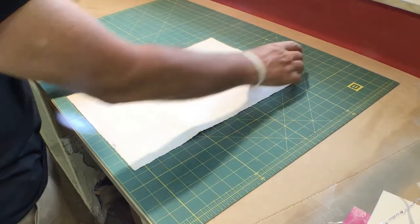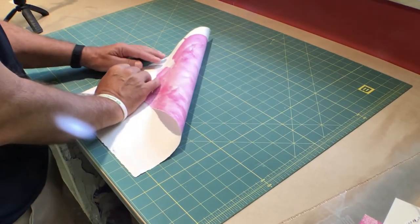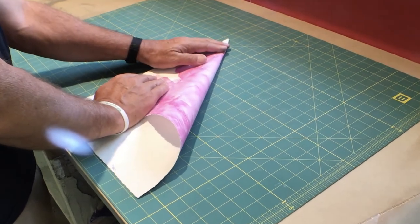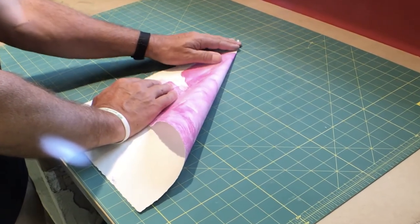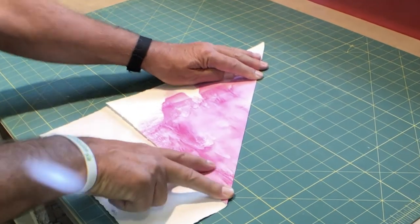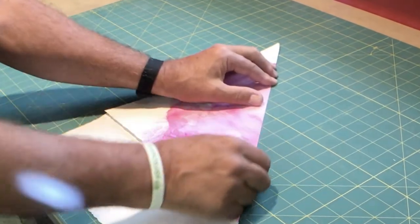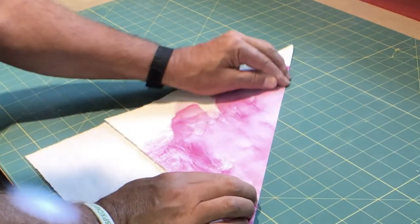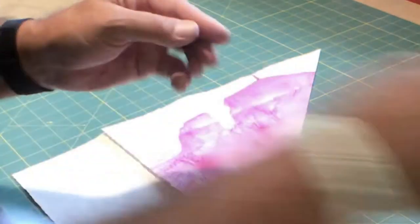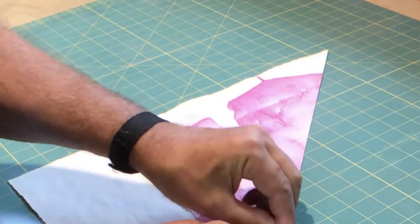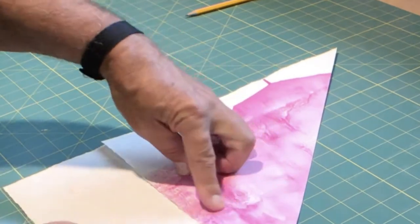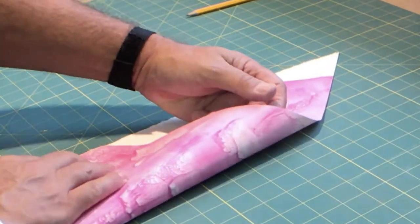So first thing we're going to do is grab the top right hand corner and keeping the left edges aligned, I'm just going to pull it down until it makes a 45 degree angle right there. Again, keeping the edge, the left edge lined up and then go ahead and crease it. I don't have a bone folder in the studio that I could find. I don't know what I did with it. I don't use it very often. So I just grabbed a pencil. Pencil works fine. It's not as slick. It doesn't do as good of a job, but it still works.